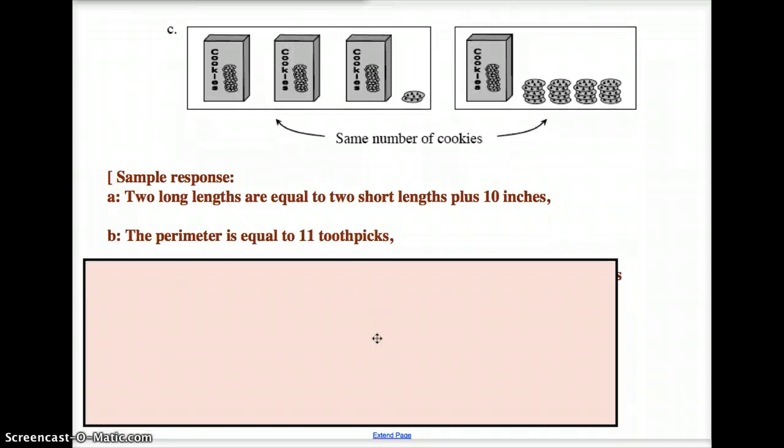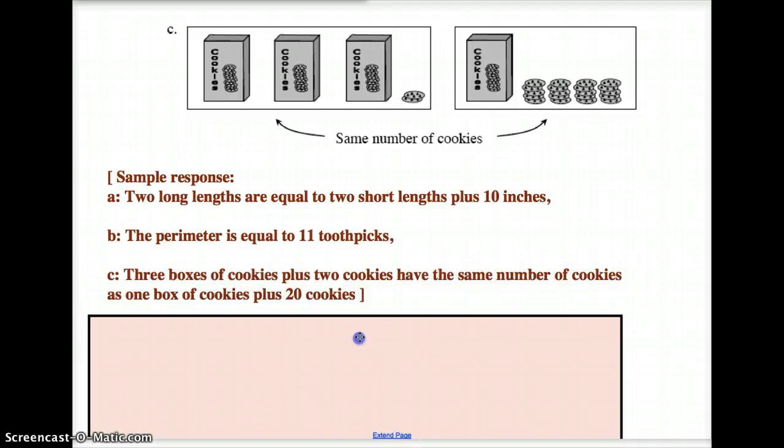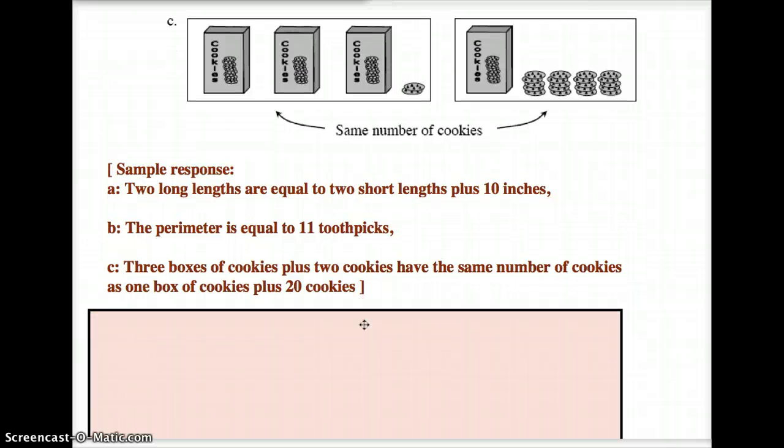I will, however, have you try letter C. What I'd like you to try and do here is pretend that there's an equal sign right between these two, so this equals that. Go ahead, pause the video very quickly and just write down what you come up with. Alright, you should have that done now. So what I came up with is: the three boxes of cookies plus two more cookies is the same as, or equal to, one box of cookies plus 20.